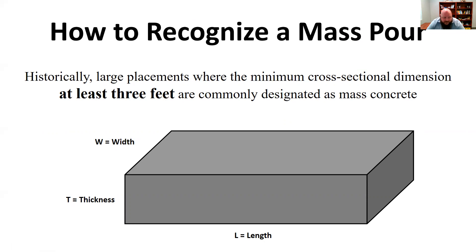A lot of foundations may have a width of three or four feet and a height of four or five feet, and then run hundreds of feet long — it's pretty common to do a mass pour on that. Or think about a dam, which can be very thick — three, five, six, even 30 or 60 feet — it just depends on the specific dam.